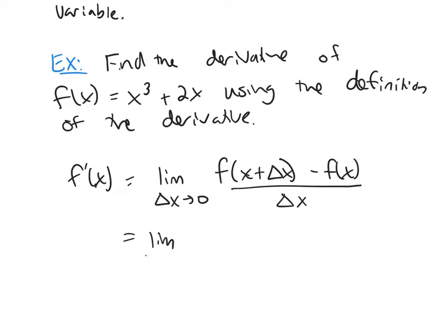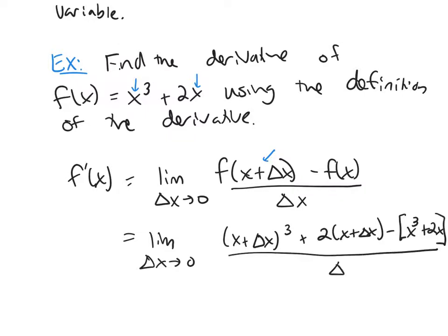The limit as delta x goes to 0. Now we're going to use our specific function. Everywhere there's an x in your formula, replace it by x plus delta x. So this would be x plus delta x cubed plus 2 times x plus delta x minus x cubed plus 2x all over delta x.